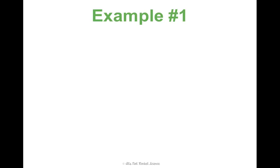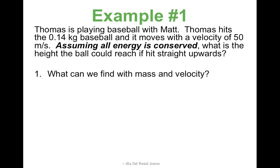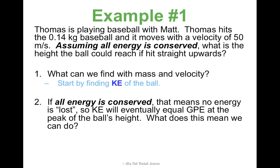Let's do an example. Thomas is playing baseball with Matt. Thomas hits the 0.14 kilogram baseball and it moves with a velocity of 50 meters per second. Assuming all energy is conserved according to the law of conservation of energy, what is the height the ball could reach if it's hit straight upwards? We're looking for height, but what we've got is mass and velocity. What can we find with mass and velocity? We can find kinetic energy — KE equals one half mv squared. Now, if all energy is conserved, that means no energy gets lost. So all of that kinetic energy should eventually equal GPE at the peak of the ball's height.